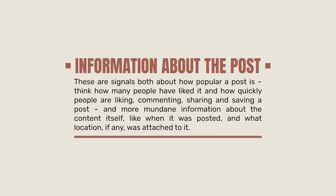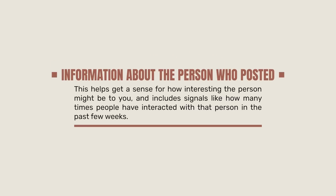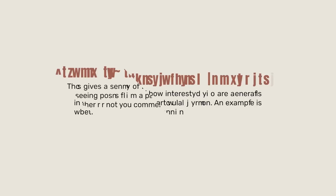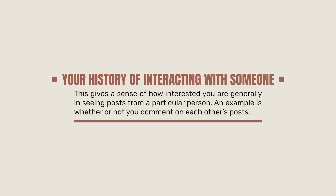From there, they look at information about the post — how many people have liked it, how quickly people are liking, commenting, sharing, and saving it, but also more mundane information like what the content is about, when it was posted, and what location is attached to it. Third, information about the person who posted helps them gauge how interesting that person might be to you, looking at how many times you've interacted with that person over the last few weeks, which flows into the fourth signal: your history of interacting with someone, gauging if you want to see more from a particular person regularly.